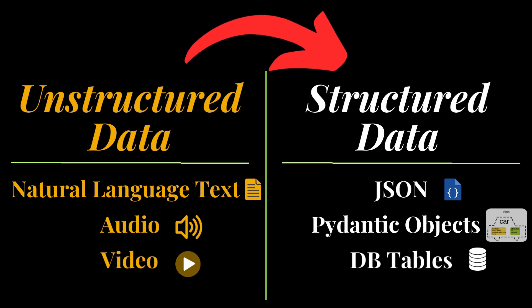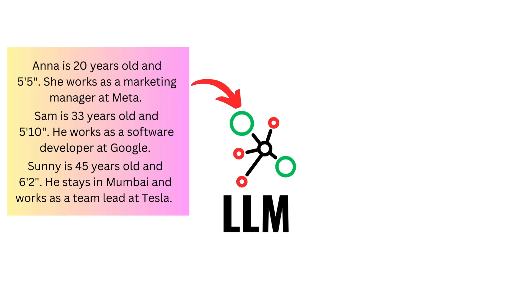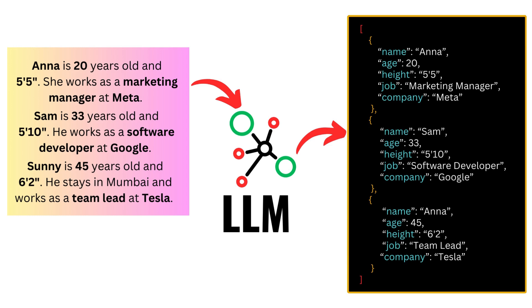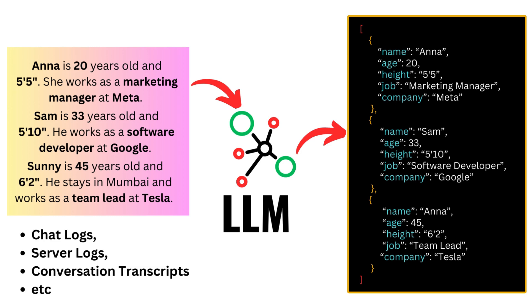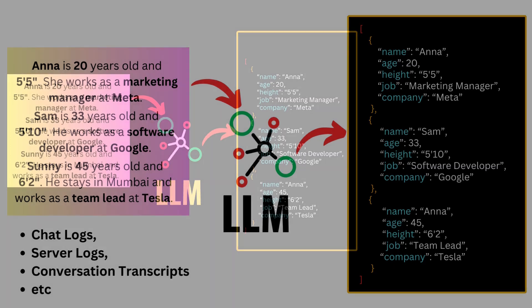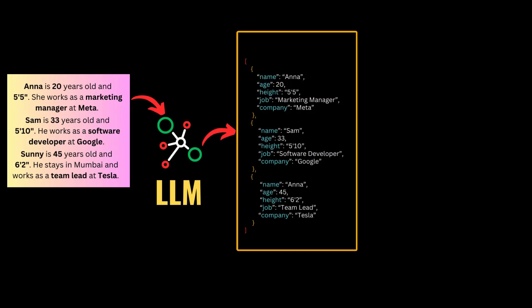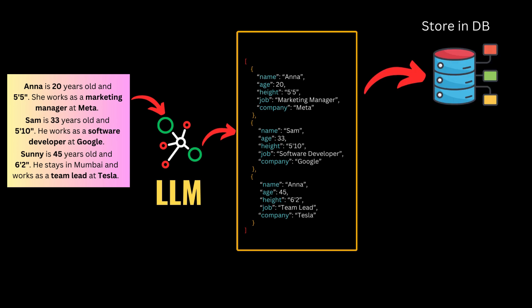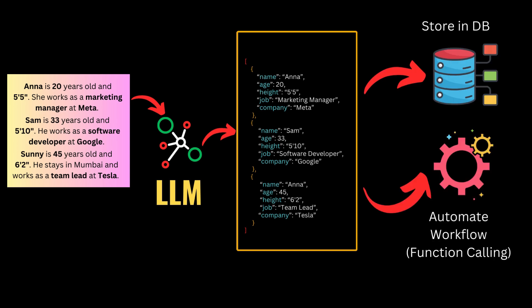One useful application of large language models is extracting structured data from unstructured data. You can get an LLM to read natural language, identify semantically important details such as names, dates, addresses and figures, and write them in a consistent structured format regardless of the source format. This can be especially useful when you have unstructured source material like chat logs, server logs and conversation transcripts. Once you have structured data in Pydantic or JSON format, you can send them to a database or parse structured output in code to automate workflows through the function calling feature.